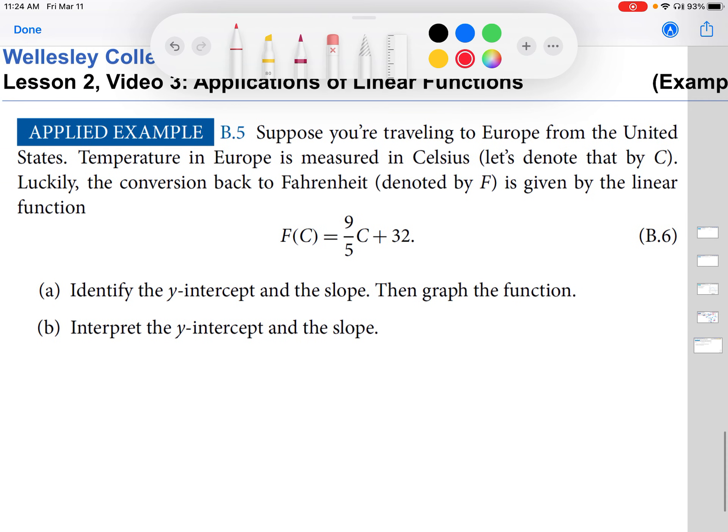Suppose you're traveling from Europe to the United States. Temperature in Europe is measured in Celsius, so we're denoting that by C. The conversion back to Fahrenheit, denoted by F, is given by the linear function F(C) = (9/5)C + 32. So we are to identify the y-intercept and the slope, and then we want to graph this function. And then later we want to interpret the y-intercept and the slope.